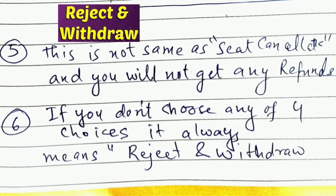If you don't choose any of the four choices mentioned, it clearly means reject and withdraw. Even though you are not actively selecting reject and withdraw, since you are not choosing any of the four options, the system will consider it as reject and withdraw and you will be out of the counseling. Thank you.